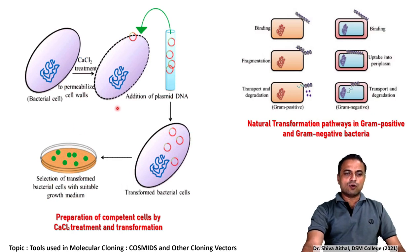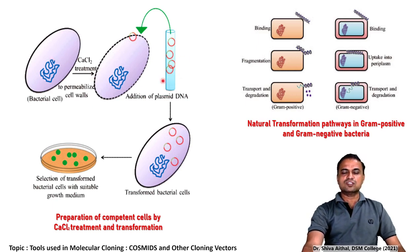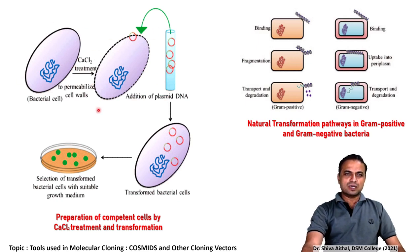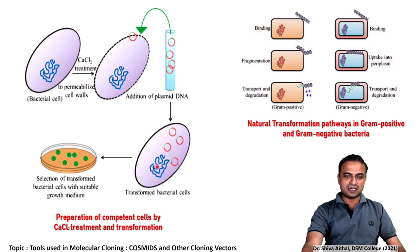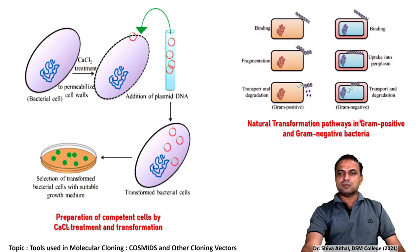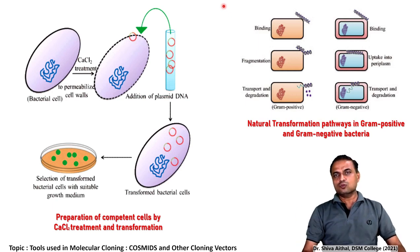The preparation of competent cells by calcium chloride treatment is very simple. A bacterial cell is taken and introduced into a test tube containing 1 to 5 millimolar of calcium chloride, and the cell wall becomes permeable. As you can see, this is an intact cell wall, and once it becomes permeable this plasmid can be introduced inside the bacterial cell. Once the bacteria receives the plasmid with the gene of interest, it is called a transformed bacterial cell, which can be selected on the basis of plating techniques.